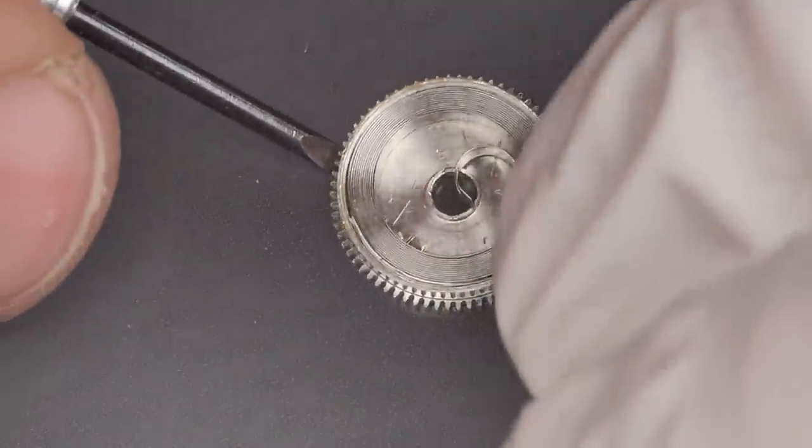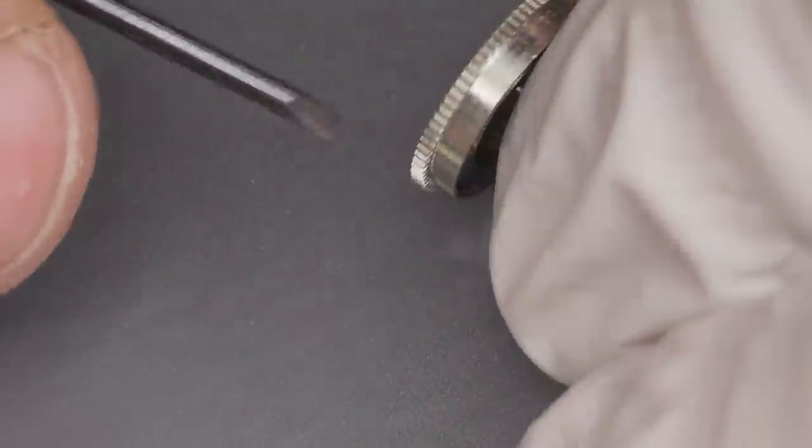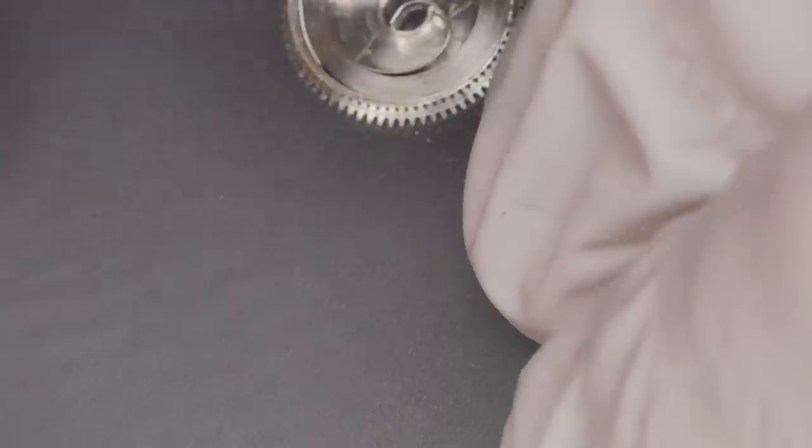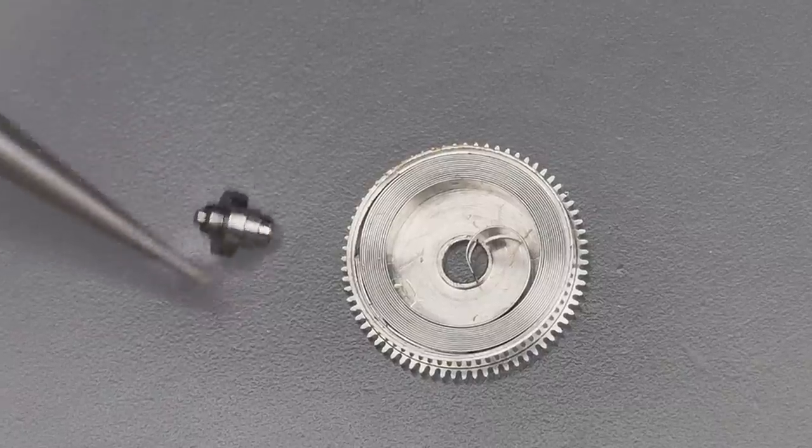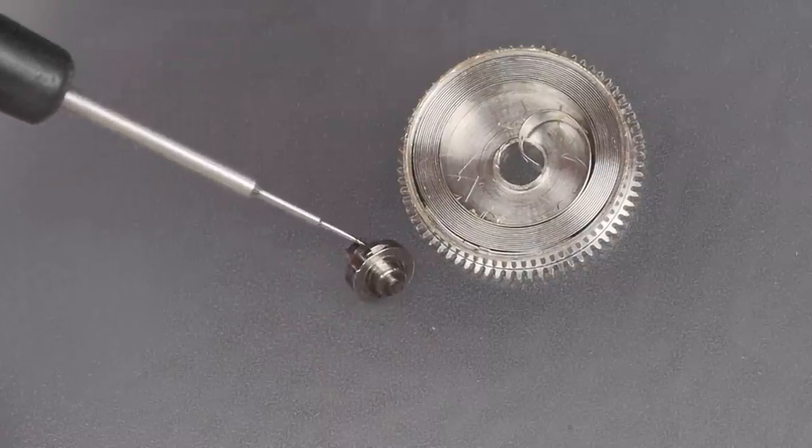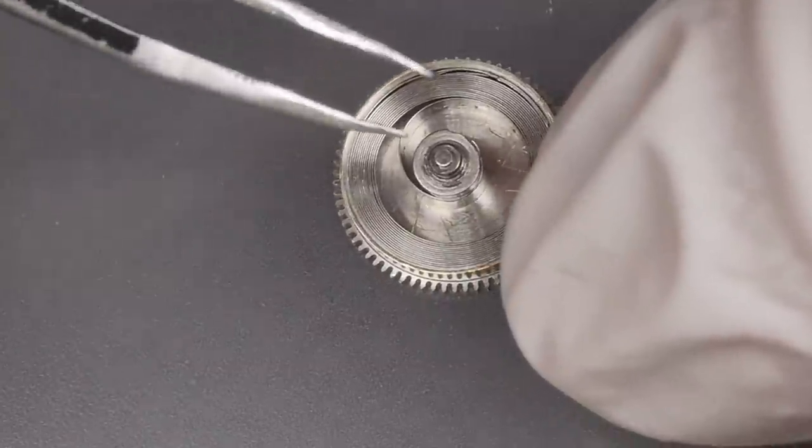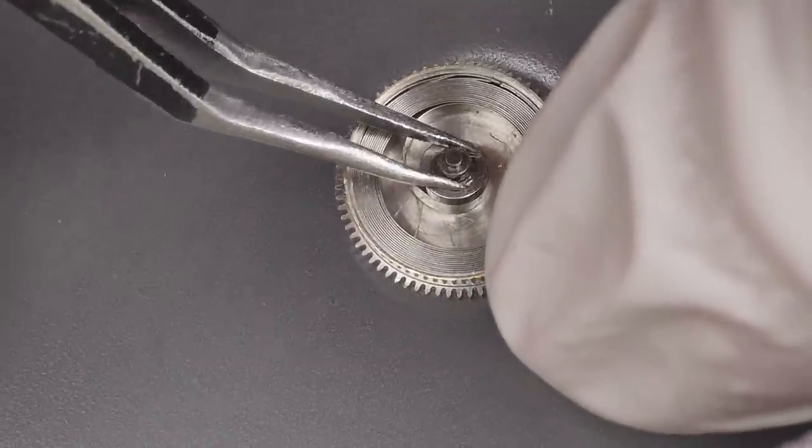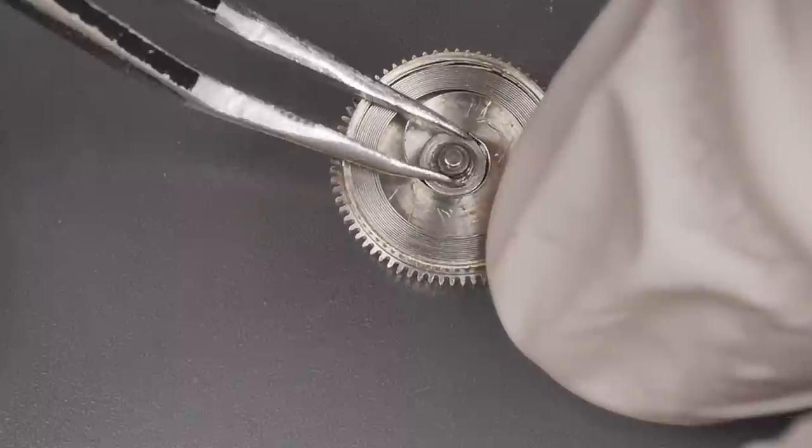If I miss by too much, I'll have to take the mainspring out and start all over again. But in this case, since I'm pretty close, I can use a screwdriver to push the mainspring around until the T-brace seats into the hole. Now I can lubricate the barrel arbor on the face that rides against the hole in the barrel. Lining the arbor up with the barrel hole and the hole in the end of the mainspring, I work it into place.